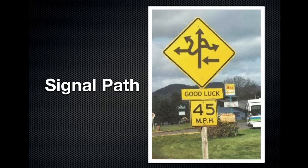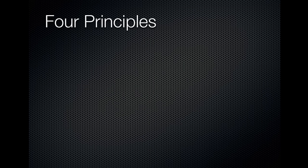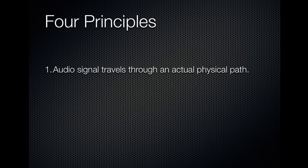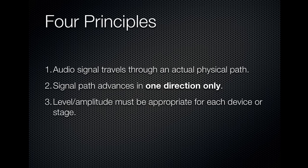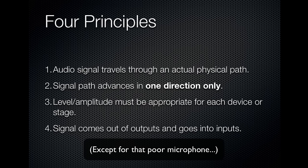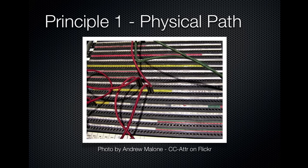Let's take a look at the signal path in the analog domain. There are four principles to be aware of when setting up an analog system. Number one: the audio signal travels through an actual physical path — you have actual wires for each pathway the audio signal will take. If you don't have a wire taking you from one place to another, the audio can't go that way. Number two: the signal path advances only in one direction.